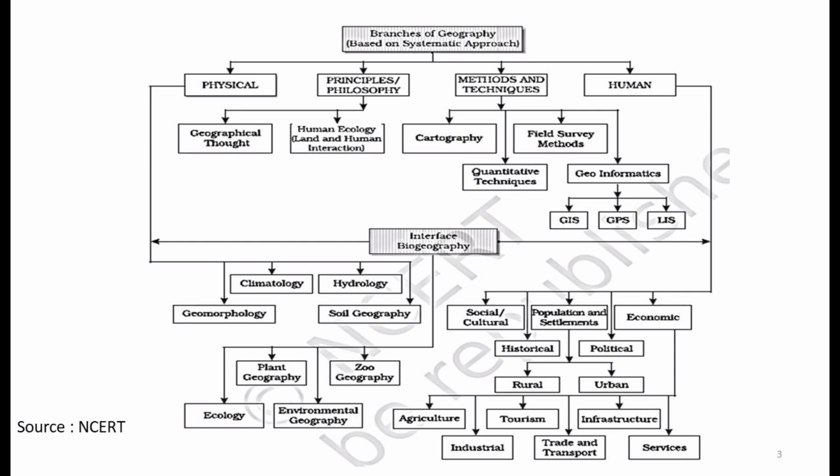The third sub-branch of methods and techniques is field survey methods. Field survey is very important in geography because geography is a spatial science — a science of regions and areas — and we cannot study an area without visiting it. Even satellite data and satellite analysis requires ground truth verification, so it becomes necessary for a geographer to go into the field and conduct research and analysis on the ground.